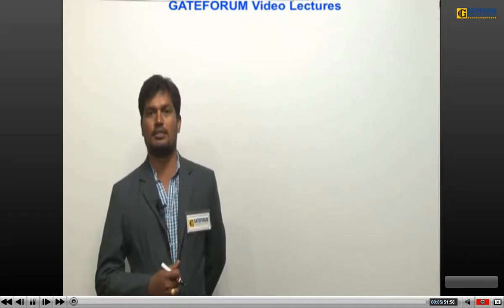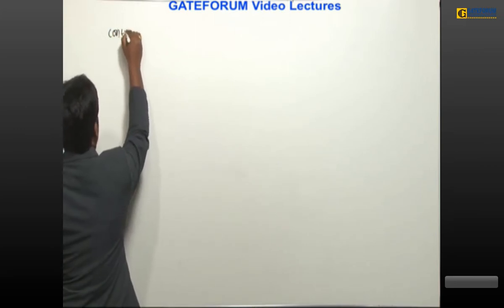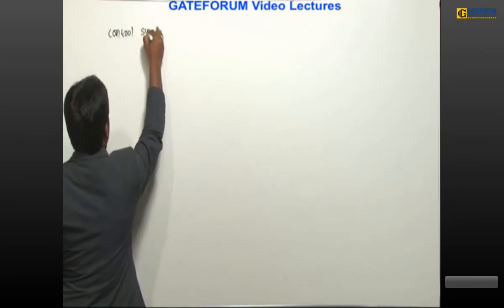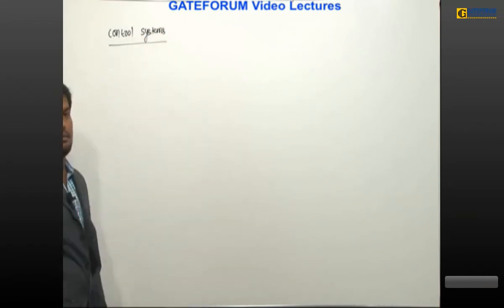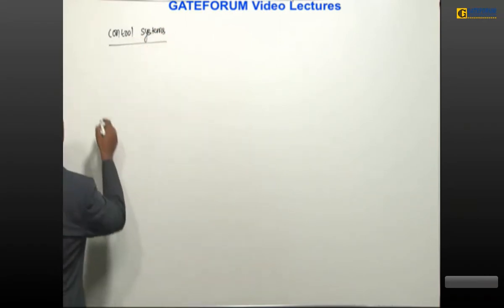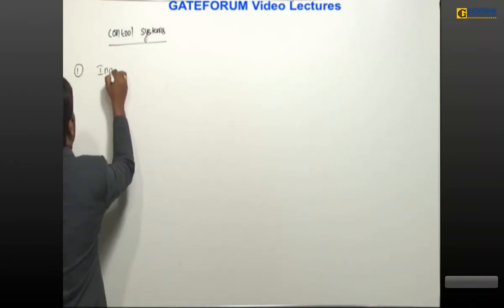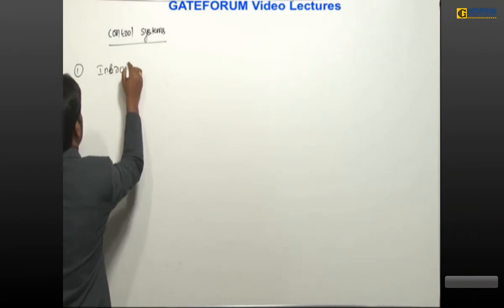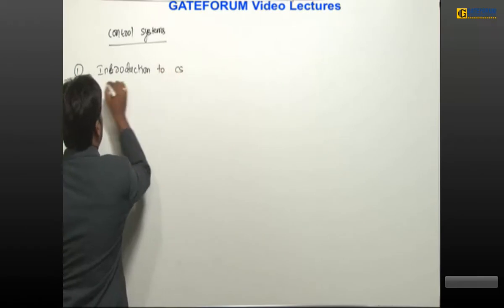We will see the control system syllabus for electrical, electronics, and instrumentation students. I am dividing the total control system syllabus into eight parts — eight units. Topic number one is introduction to control system.